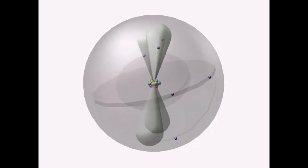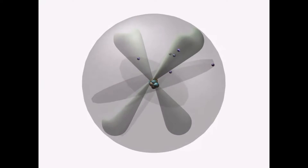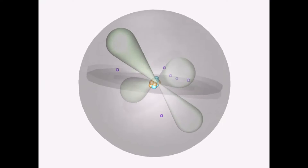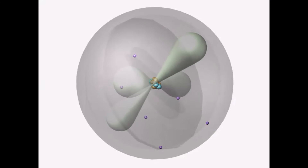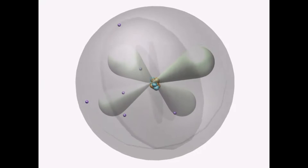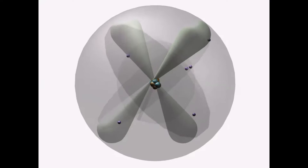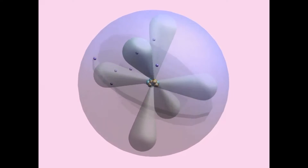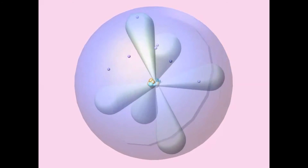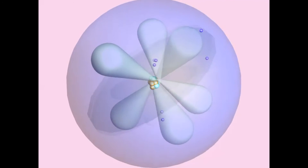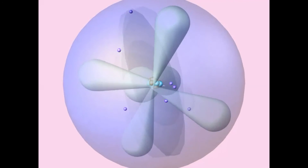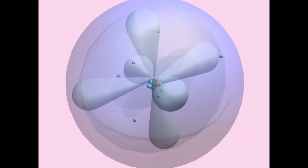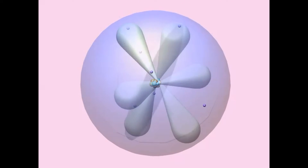Although the electrons, which circle in clouds around an atom, can absorb packets of electromagnetic energy, each atom is specific to the amounts of energy that can be absorbed, given that the electrons have specific orbitals and are trying to maximize their distance between each other.